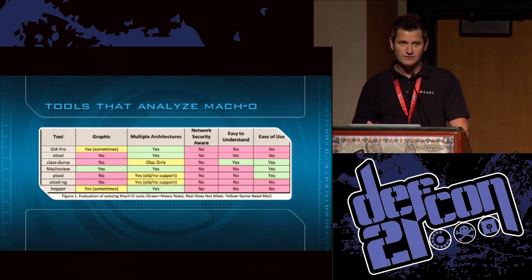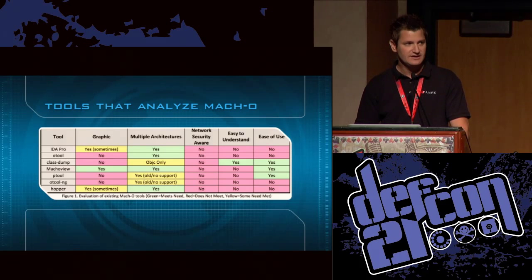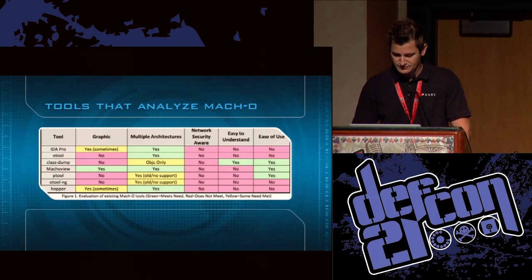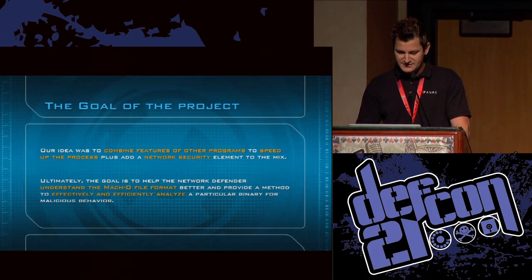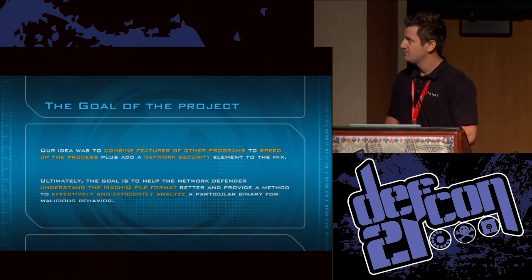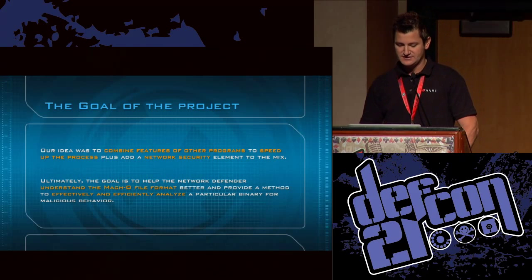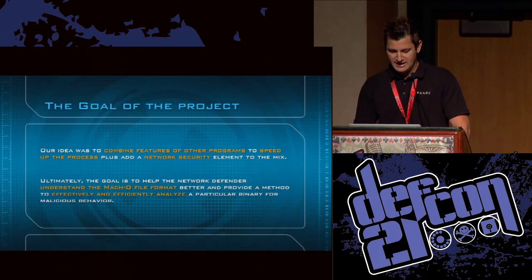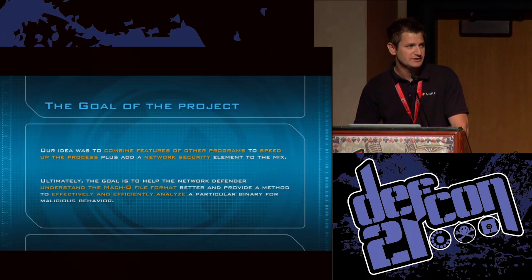Those categories are: making it graphical, having multiple architectures, making it network security aware, easy to understand, and very easy to use. The goal is to combine the features of all those programs and speed up the process, plus add a network security element. Ultimately, the goal is to help the network defender understand the Mach-O file format better and provide an effective, efficient way to analyze a binary for malicious behavior.